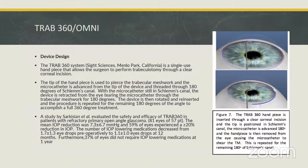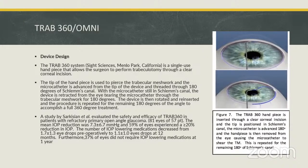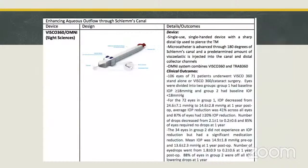TRAB 360 is a single-use handpiece that allows the surgeon to perform trabeculotomy through a clear corneal incision. The tip pierces the trabecular meshwork and a microcatheter is advanced 180 degrees through Schlemm's canal. With the microcatheter still in the canal, the device is retracted, tearing through the trabecular meshwork for 180 degrees. The device is rotated and reinserted to complete the remaining 180 degrees. Visco 360 is a similar single-use device where the microcatheter is advanced 180 degrees and a predetermined amount of viscoelastic is injected into the canal and distal collector channels, producing viscodilatation of Schlemm's canal.